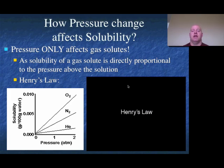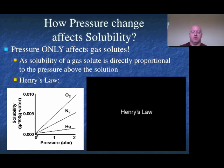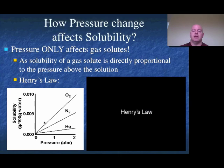Pressure changes affecting solubility only apply to gas solutes. As pressure changes, the solubility of a gas is directly proportional to the pressure above the solution. For example, if 2 grams of oxygen dissolve at atmospheric pressure, doubling the pressure doubles it to 4 grams, and doubling again gives 8 grams. This direct proportionality is called Henry's Law — it describes the correlation between pressure above a solution and the solubility of the gas.